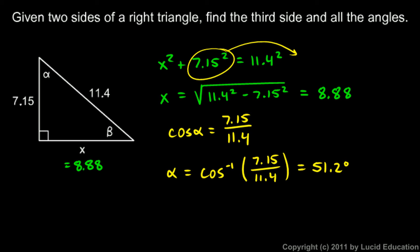Now I could do something similar to find beta. I could say the sine of beta is this over this, but it's going to be a lot easier just to subtract. I know that if this is a right triangle, that these two angles have to add up to 90. Alpha and beta add up to 90. So beta is going to be 90 minus alpha, and alpha is 51.2. And so we do that and we get 38.8 degrees. So those are the three answers. We found the third side, and now we know all the angles.